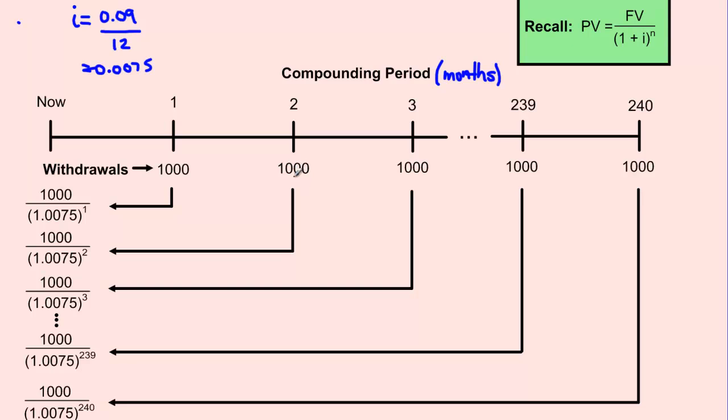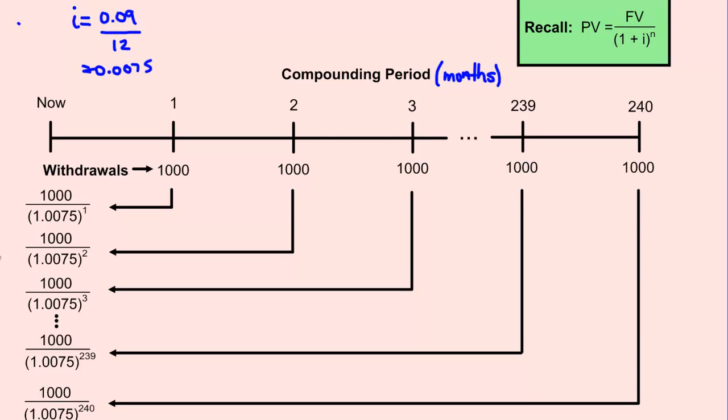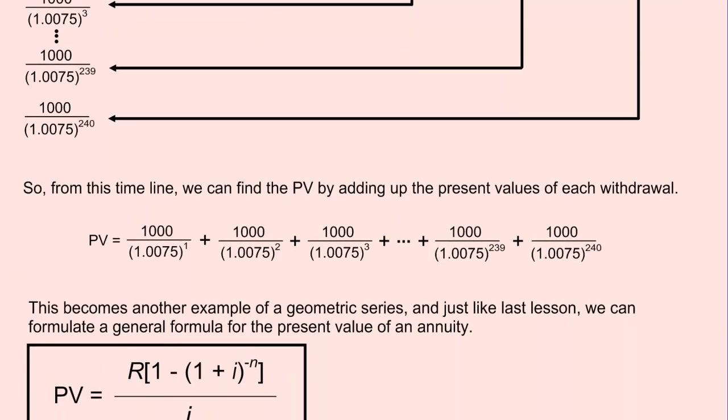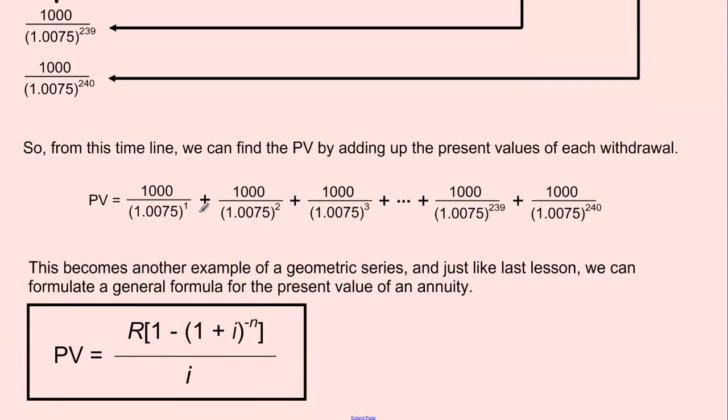The withdrawal that we're going to make two months from now, to find the present value, I'm going to bring that back two total months, so n would equal 2. And so on and so on, all the way until my 240th final withdrawal of $1000, which will be equal to this. So the present value, or the total amount that I will need in my account, or Brad and Angelina will need in their account, is equal to all of these things added together. So all those things added together creates this. It looks as though it's a series, right? This is a geometric series.